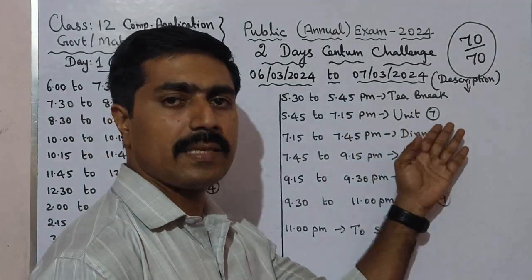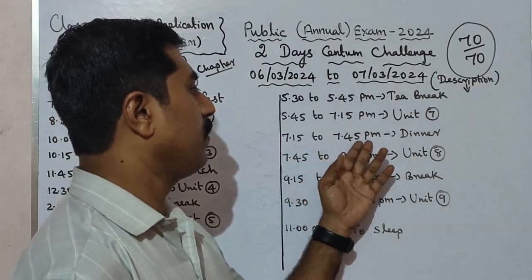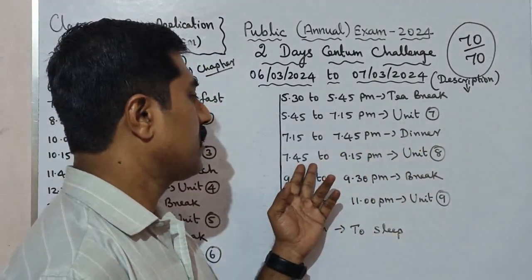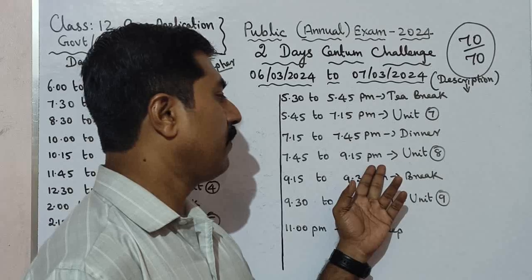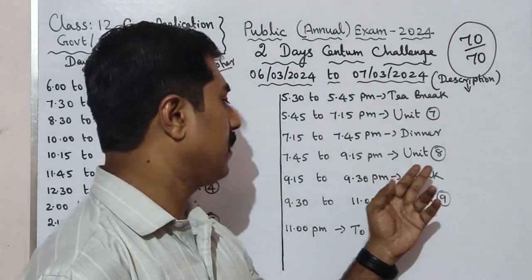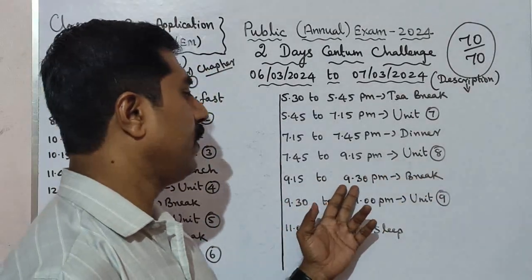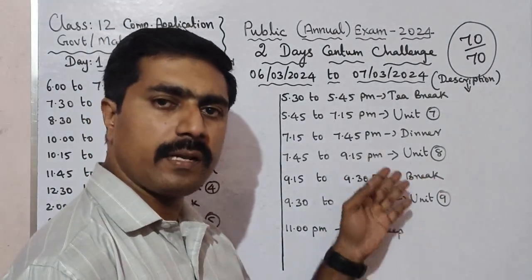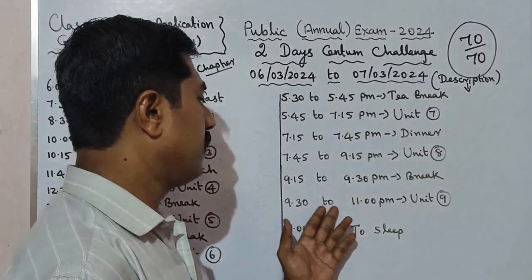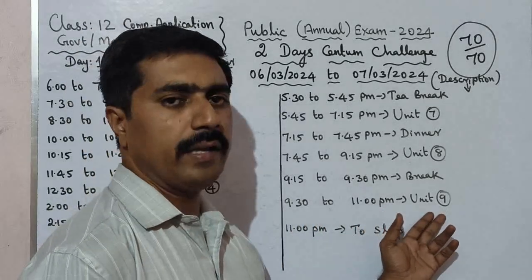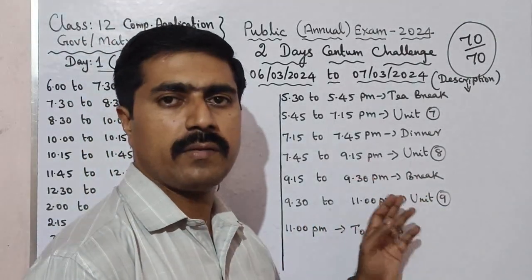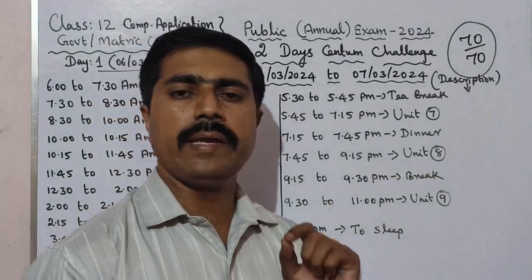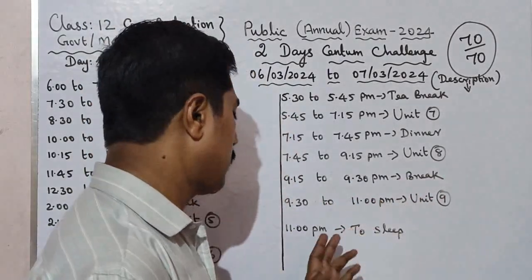From 5:45 to 7:15 PM is Unit 7. Then 7:15 to 7:45 PM is dinner. After dinner, 7:45 to 9:15 PM is Unit 8. From 9:15 to 9:30 PM is a 15-minute break. Then 9:30 to 11:00 PM is Unit 9. So Day 1 covers a total of 9 units out of 18 total units.